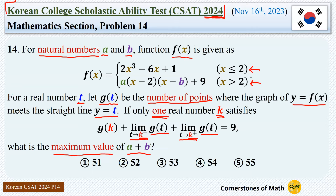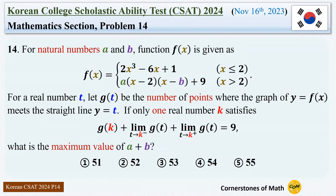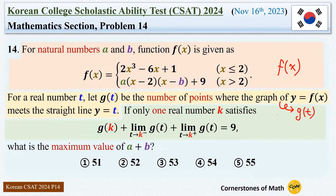Alright, that is one heck of a lengthy problem. To make things feel less overwhelming, let us divide the problem into three parts. The first part is where the information about function f(x) is given. The second part is how the function g(t) is defined. And the last part is about this condition containing one-sided limits. Let's start from the first part.